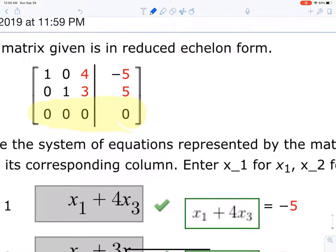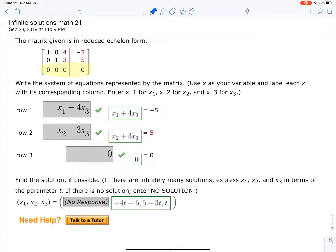If this number here was a number like three, there'd be no solutions, but it's not, so we do have infinite solutions. In this case, it should say something about a parameter t. Read this part. It says if there are infinitely many solutions, express these variables in terms of the parameter t.